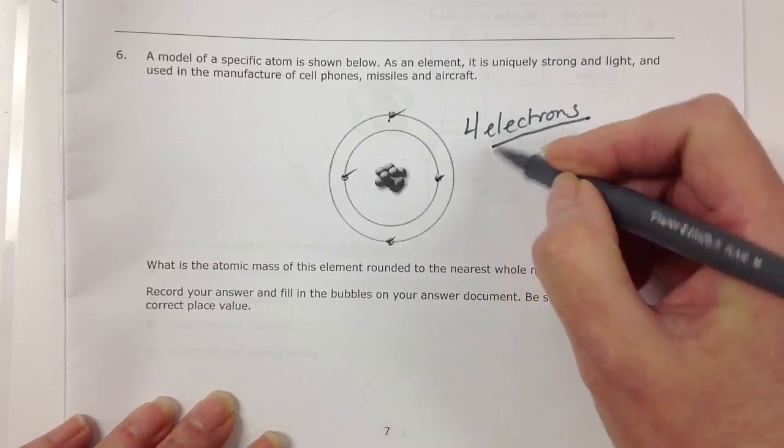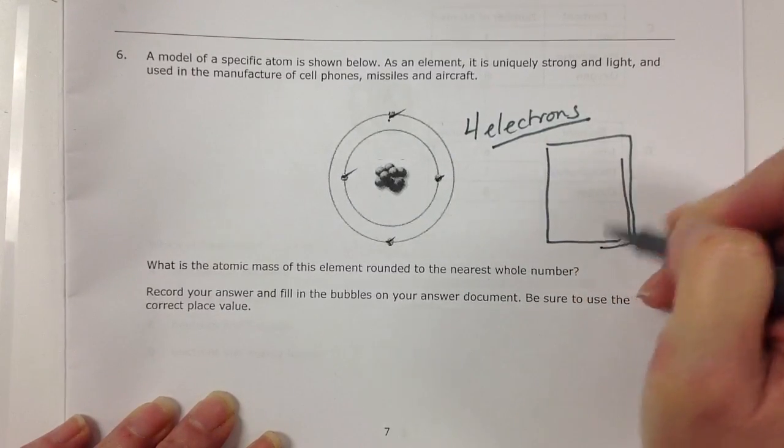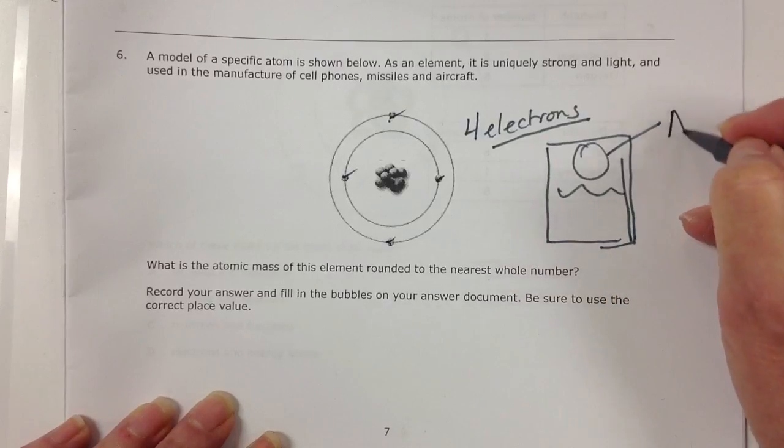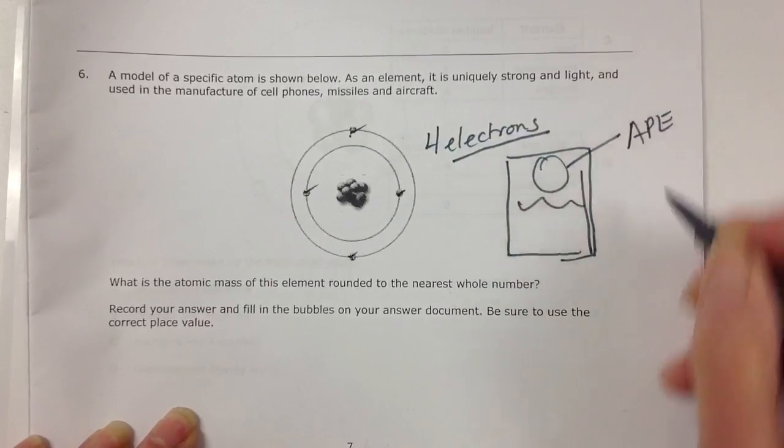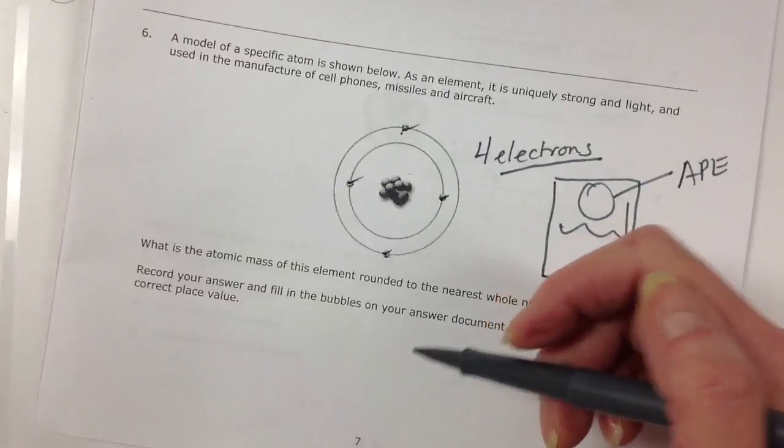Remember, electrons we can find in the element key. That would be that top number, right, which is our atomic number. So if we know it has four electrons, we just need to find our periodic table.